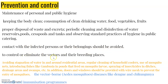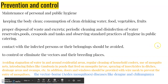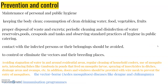To control or eliminate vectors and their breeding places, various practices can be followed. These include avoiding stagnation of water in and around residential areas, cleaning of household coolers, and use of mosquito nets. Introduction of fish like Gambusia in ponds — which feed on mosquito larvae — spraying of insecticides in ditches and drains, and fitting doors and windows with wire mesh to prevent entry of mosquitoes are all recommended measures.